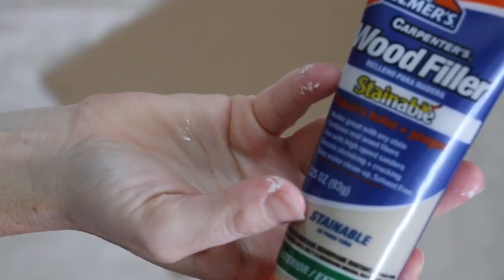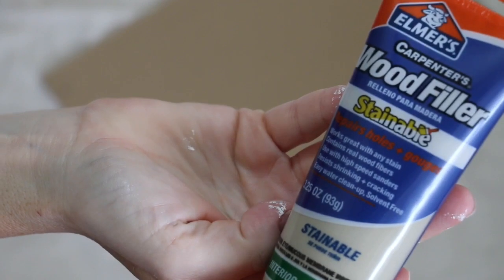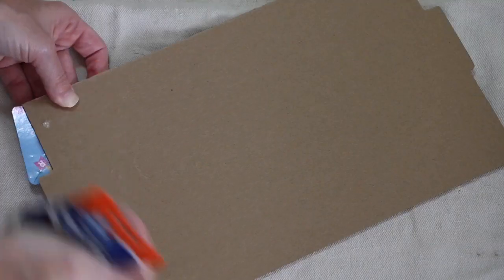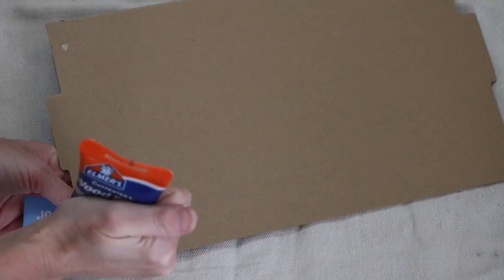After that, you are going to go in with some wood filler. This did come from the Dollar Tree and fill in the tiny little holes that you have after removing the string that was used in order to hang the sign.